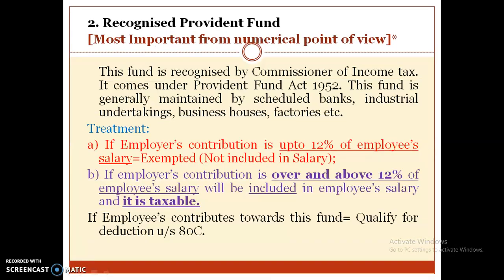The second type is Recognized Provident Fund, which is very important from a numerical point of view. This fund is recognized by the Commissioner of Income Tax and comes under the Provident Fund Act 1952. This fund is generally maintained by scheduled banks, industrial undertakings, business houses, and factories.